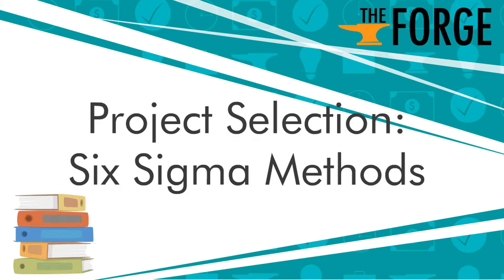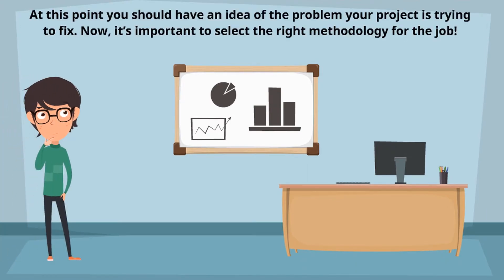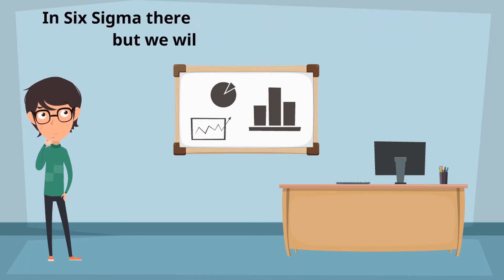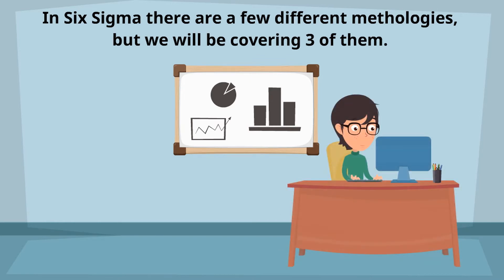Project Selection: Six Sigma Methods. At this point, you should have an idea of the problem your project is trying to fix. Now it's important to select the right methodology for the job. In Six Sigma, there are a few different methodologies, but we'll be covering three of them: PDCA, PDSA, and DMAIC.